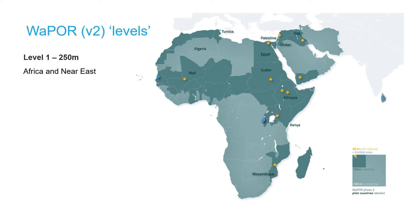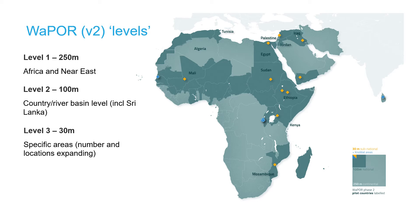The WAPOR database has three so-called levels, which relate to the spatial resolution and are provided for different geographical areas. For version 2, the level 1 data has a spatial resolution of 250 meters and covers the African continent and Near East area. The level 2 data has a spatial resolution of 100 meters and is available for specific countries and river basins. Finally, the high-resolution data of 30-meter resolution is made available for specific areas, mostly focusing on agricultural lands.